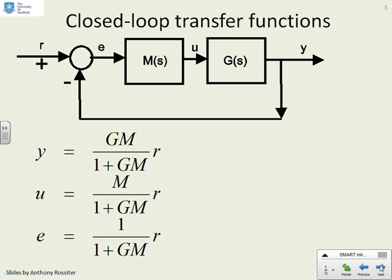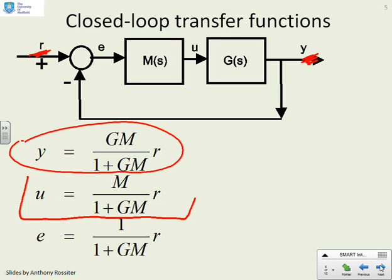Closed loop transfer functions. For a simple block diagram such as the one here, where we have a compensator M and a compensator G, students should be confident at writing the following relationships. The output is given as GM over 1 plus GM, times the target R. The system input U is M over 1 plus GM into R — you often need that to look at actuator activity. And the error, which is the offset between the target and the output, is given as 1 over 1 plus GM times R.